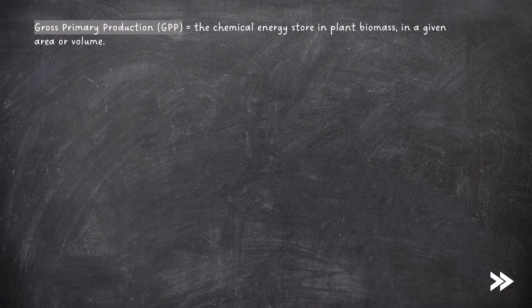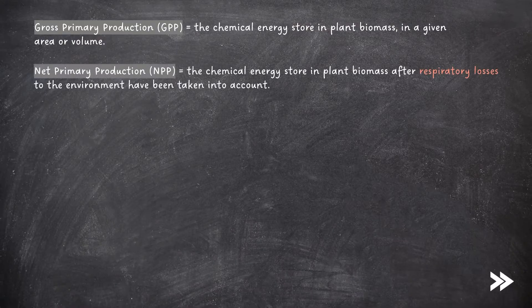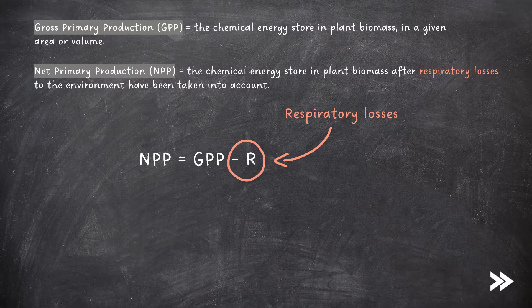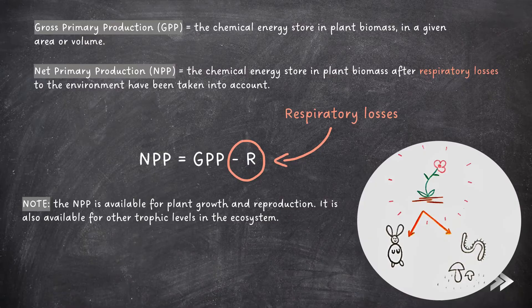The gross primary production (GPP) is the chemical energy store in plant biomass in a given area or volume. Net primary production (NPP) is the chemical energy store in plant biomass after respiratory losses to the environment have been taken into account. The NPP can be calculated using the formula NPP = GPP − R, where R is the respiratory losses to the environment. Note that the NPP is available for plant growth and reproduction, and also for other trophic levels in the ecosystem, such as those which include herbivores and decomposers.